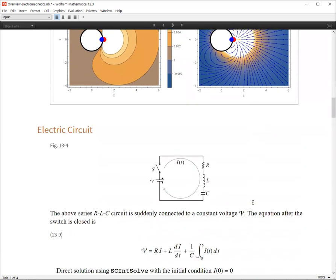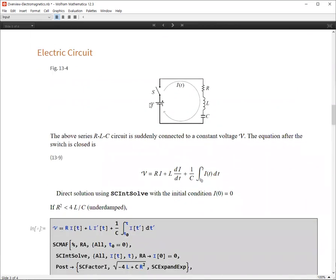The next example is about electric circuit. So we have an RLC circuit. And the switch is suddenly closed to a source of voltage V. The equation after the switch is closed is given by using Kirchhoff's law. We can derive this formula. So V is the voltage, the DC voltage here. And R is the resistance, L is the inductance, and C is the capacitance. And I is the current.